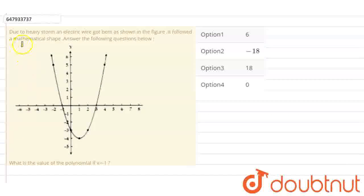Hello everyone. Here the question is: due to heavy storm, an electric wire got bent as shown in the figure. It followed a mathematical shape. Answer the following question.